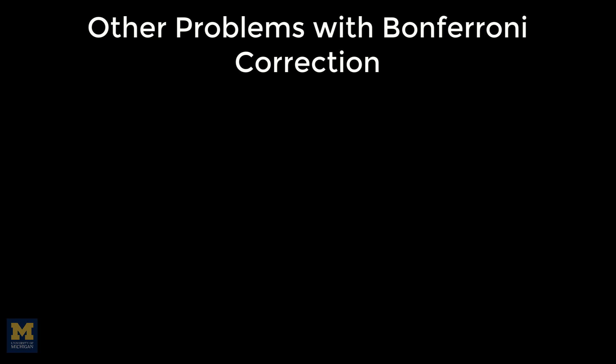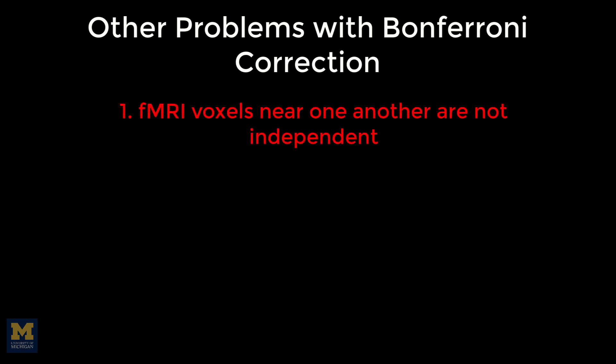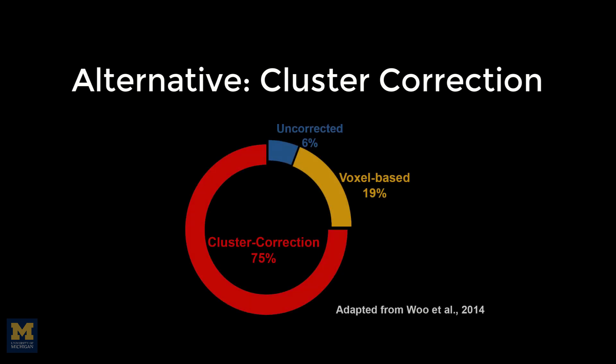Bonferroni correction, then, is too severe. Although it virtually guarantees to keep your false positive rate below 5%, it will also probably lead to a high false negative rate — that is, you'll probably conclude that no effect exists when there actually is one. An alternative is cluster correction, which is the most popular correction method in fMRI analysis.